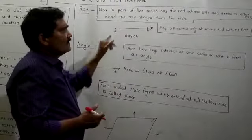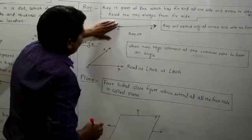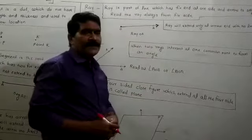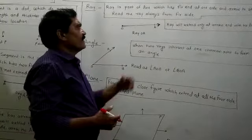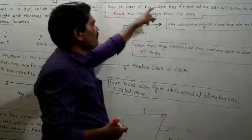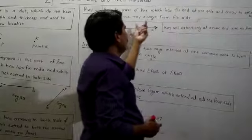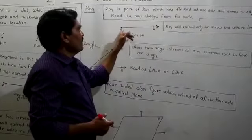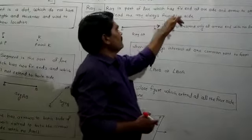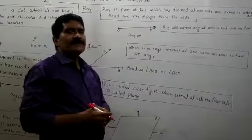The next concept is Ray. A ray is also a part of the line. If I take a line OA and cut one arrow end, giving the name OA, this is called ray OA. The definition of a ray: a ray is the part of the line which has a fixed end on one side and an arrow end on the other side. A ray will extend only at the arrow end with no limit.